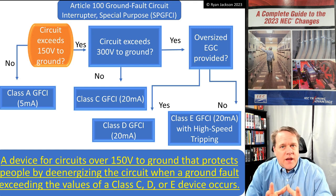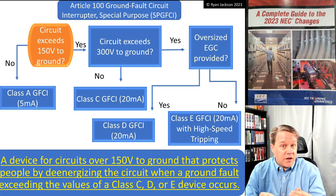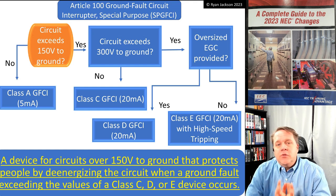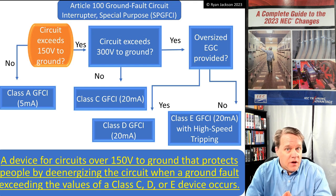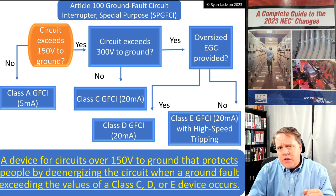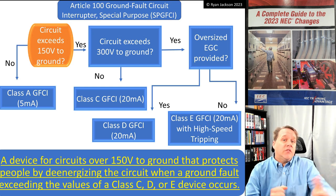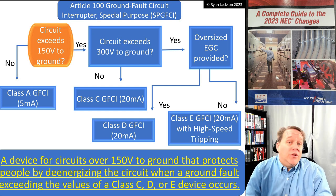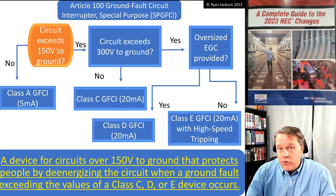The problem with a Class A device is that it has limits — it's only rated for circuits up to 150 volts to ground and up to 60 amps. So what if you have a circuit that exceeds those voltage values but you still want protection against ground faults? Take a swimming pool motor for example — I would not want to swim in a pool that is not protected by a GFCI. For 120V, 208V, or 240V motors, a Class A works fine.